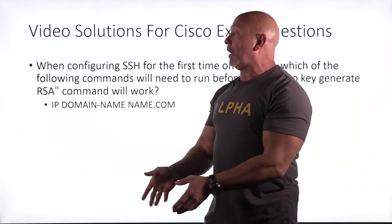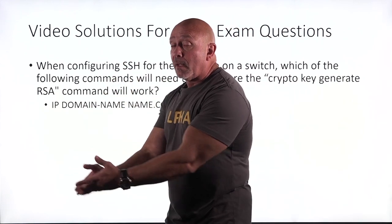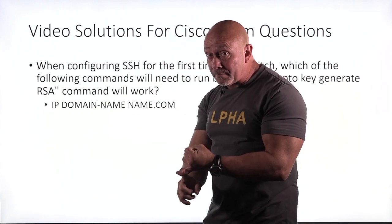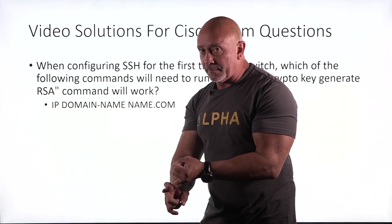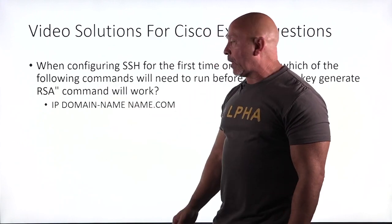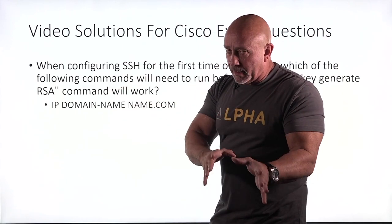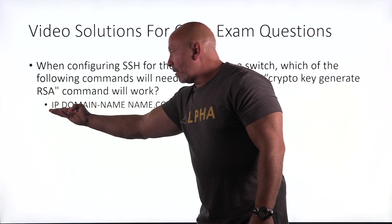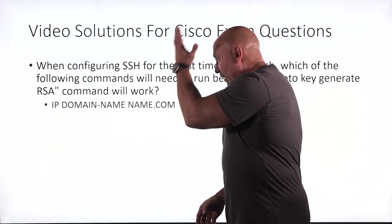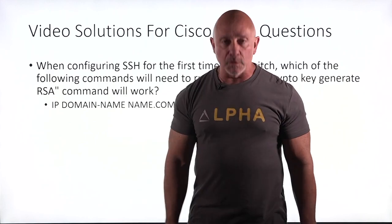So when you're reading the question, I know it's a multiple choice question, but if you have a multiple response question — Cisco throws those curveballs in there — you need a hostname and you need a domain name. Because you cannot do crypto key unless those things are there. But based on the multiple choice answers that you have to choose from, this is the logical response: ip domain-name, and again, whatever domain name you're using — bubba.com, it doesn't matter. Your domain name is what you need. See you in the next one.